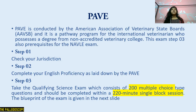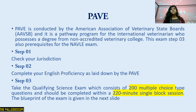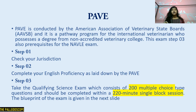PAVE is conducted by AABSB and is a pathway for international veterinarians holding a degree from a non-accredited veterinary college. Step 3 of PAVE is also a prerequisite for the NAVLE exam. Step 1: check your jurisdiction. Step 2: English proficiency test. Step 3: a qualifying science exam consisting of 200 multiple choice questions within a 220-minute single block session.